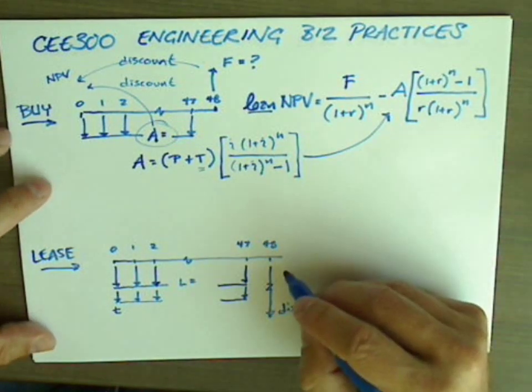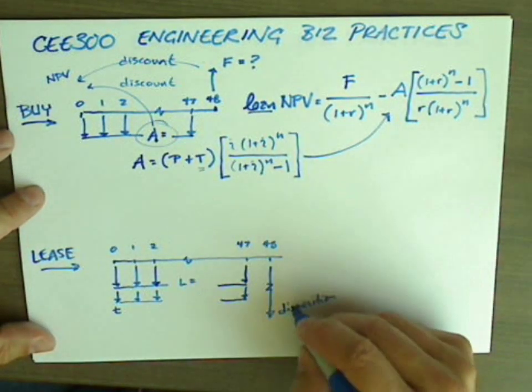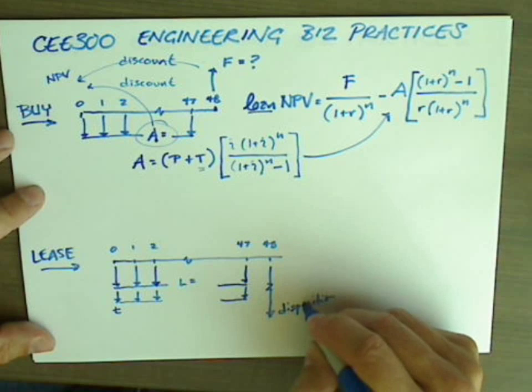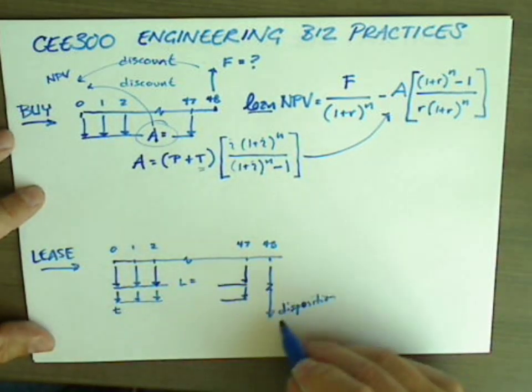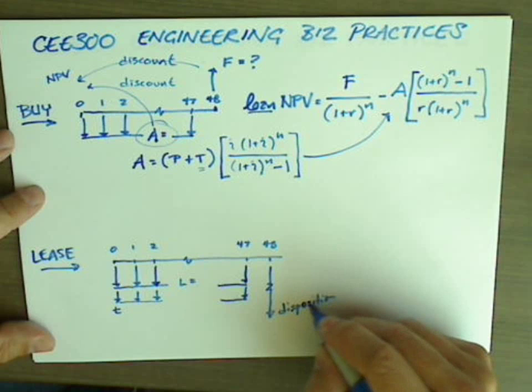So if your lease payment is on the order of $250, the disposition might be $300, it might be a little bit more. If you're leasing a very expensive car, perhaps the disposition fee is less.